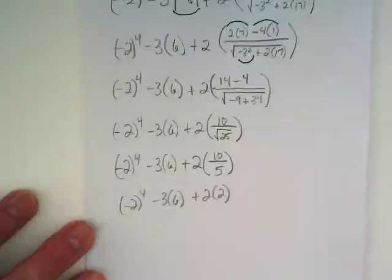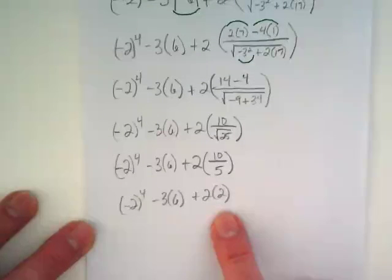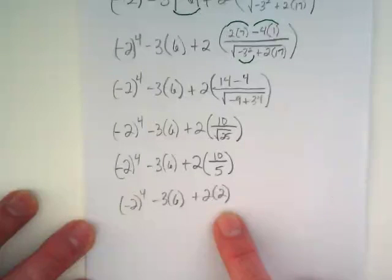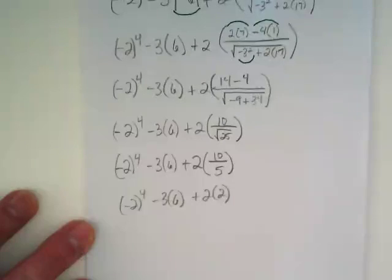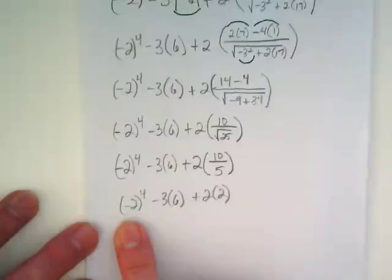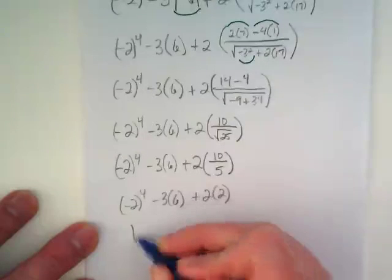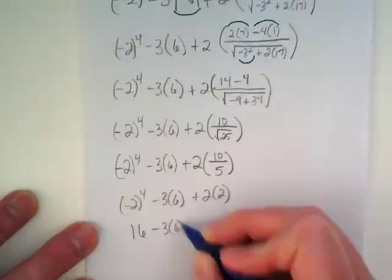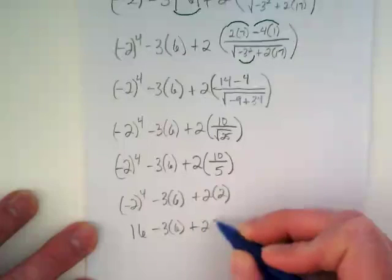We can finally do the exponent that we have been writing over and over again. Because now, this isn't really a grouping symbol. It is just 2 times 2. We are using the parentheses to show it is multiplied. But it is simplified inside of there. So we can finally check that G off of our list and go to the exponent. (-2) to the 4th power, 16, minus 3 times 6, plus 2 times 2.